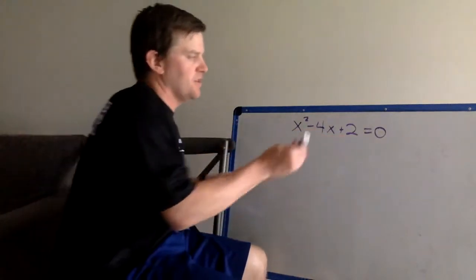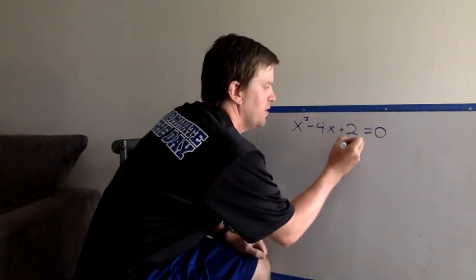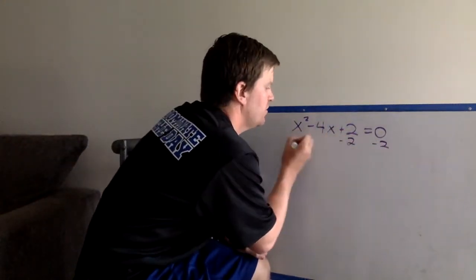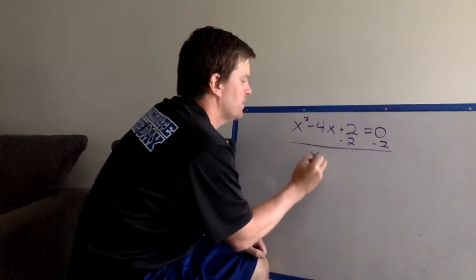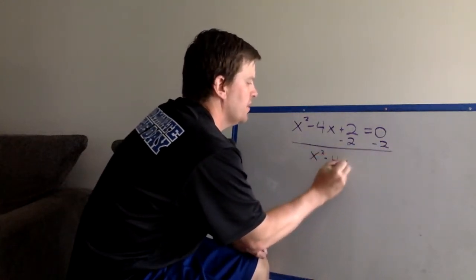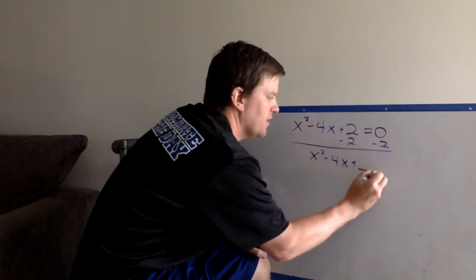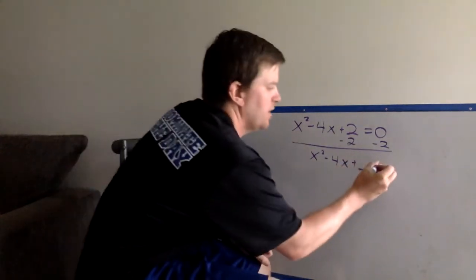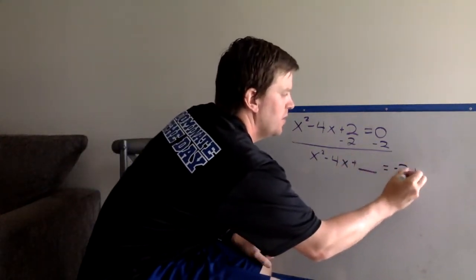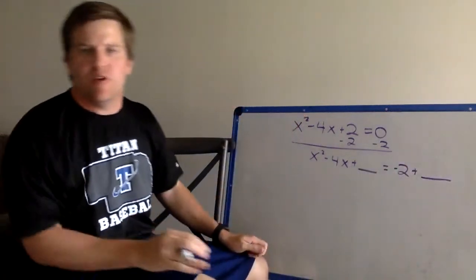First step is always move our c term. We need to make space so we can complete the square. Subtract 2 on both sides. x squared minus 4x plus blank equals negative 2. Those blanks are important. Put another blank over here so we remember to fill those in.